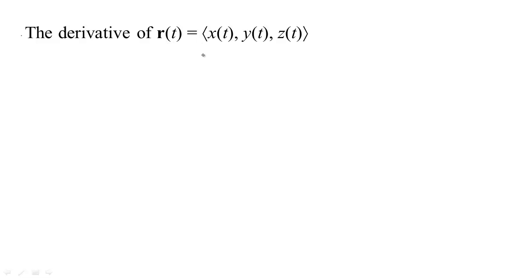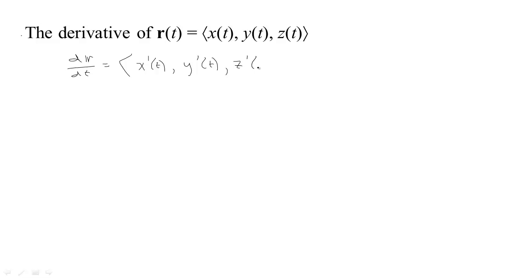We're going to focus on the case of parametric curves, either in space or a curve in the plane, in which case there just wouldn't be a Z coordinate. Since this has three outputs and one input, the derivative is a 3 by 1 matrix. The 3 by 1 matrix is also just a vector — the derivative of X with respect to time, the derivative of Y with respect to time, the derivative of Z with respect to time. That comma means 'over', so this is a tall, skinny matrix with three rows and one column.